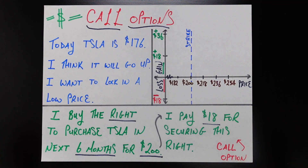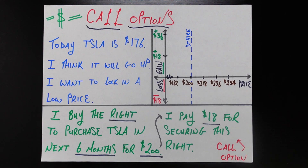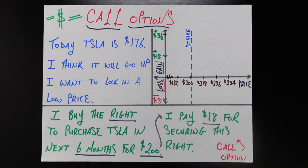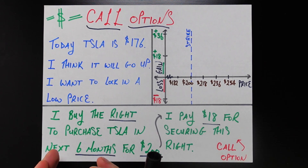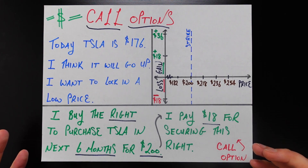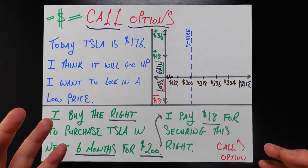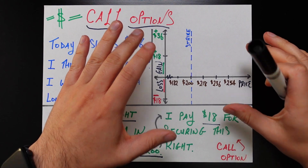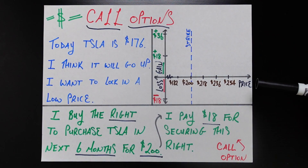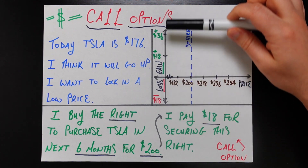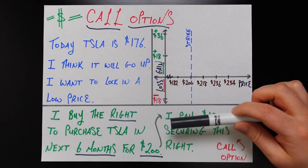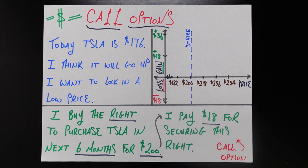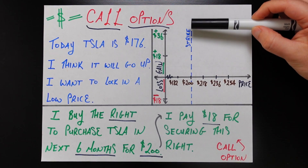In a nutshell, that's all an option is: it's just a contract that says I am buying the right to buy a certain asset — in this case Tesla stock — for a certain amount of money within a certain amount of time. Now what I want to do is think about how I actually make or lose money by securing this option. To do that we're going to be filling out this graph together. On the x-axis we have the price of Tesla stock at some point in the future, and on the y-axis we have the gain or loss in dollars from buying this call option. We have the strike price labeled at $200.